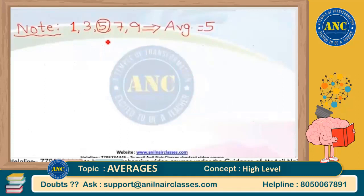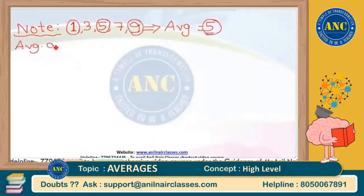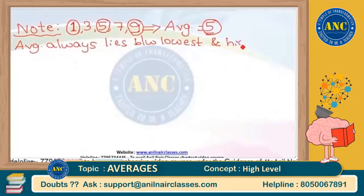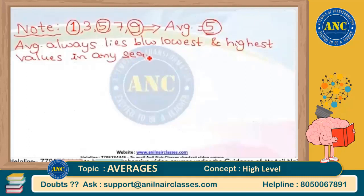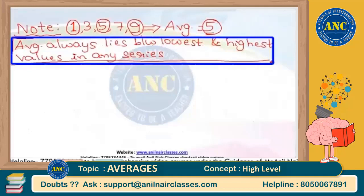For the series 1, 3, 5, 7, 9 the average is 5. Can I easily say that my lowest term in the series is 1 and my highest term is 9? Average is 5. Can I say that average always lies between lowest and highest values in any given series? This is a very very important key point: the average always lies between lowest and highest values in any given series.